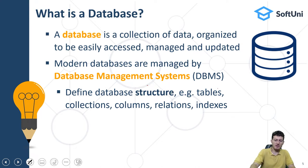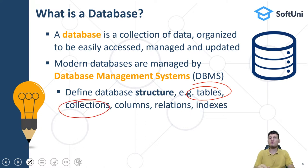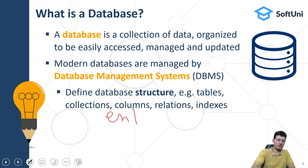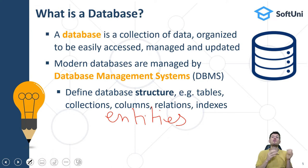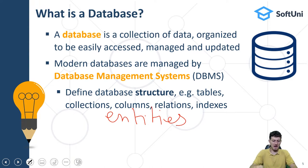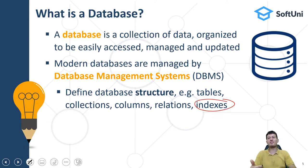Data is stored in tables or collections which hold entities represented as table rows or documents. Entities have properties and data columns. Entities can also have relationships between each other — for example, one purchase order could hold many products ordered in certain quantities. For better performance, data tables may be indexed, which means internally ordered and optimized for faster search by key.